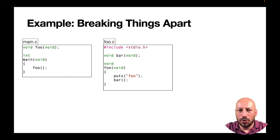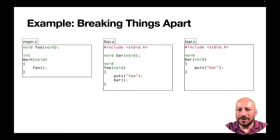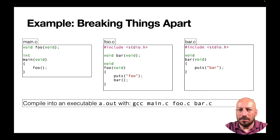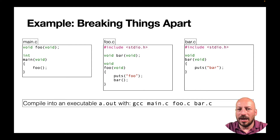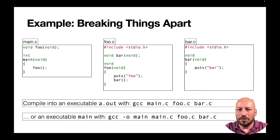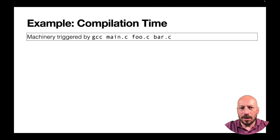The second part is for function foo, which calls two functions, so it needs declarations for those. Function puts is declared in a standard header. The third part, function bar, also calls puts, so we include the standard header there too. We can then use gcc as a wrapper for the compiler and linker: with one command we translate each source file into an object file and then link the object files together with libraries into an executable.